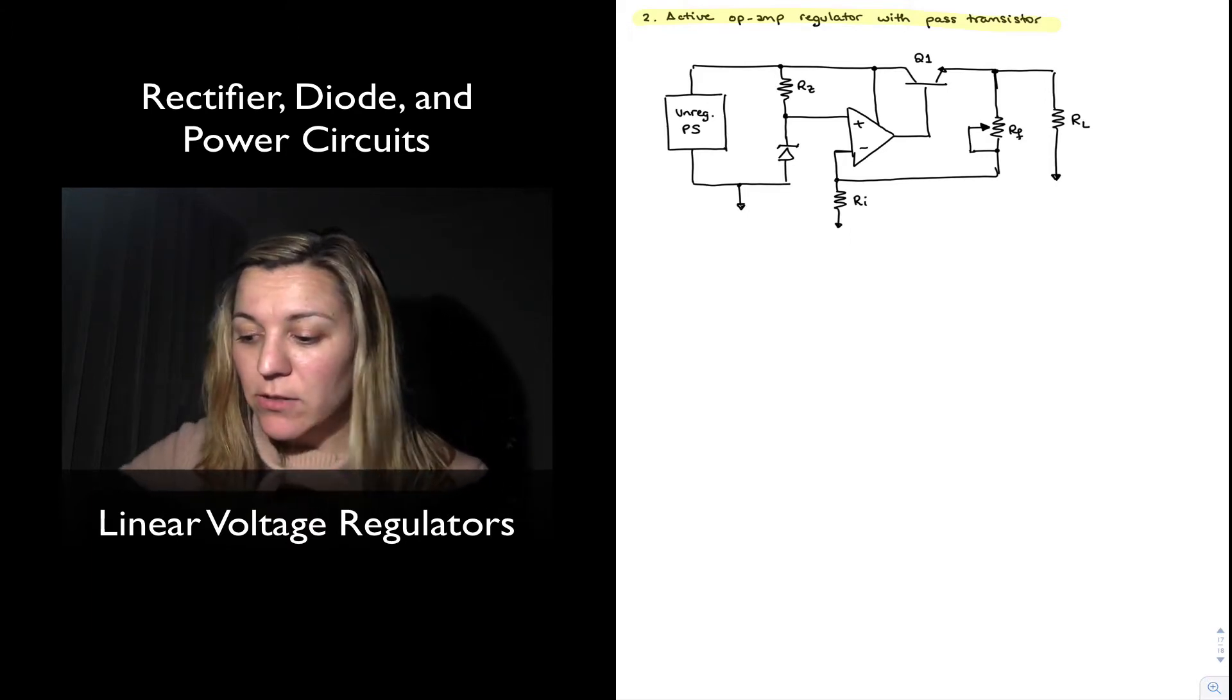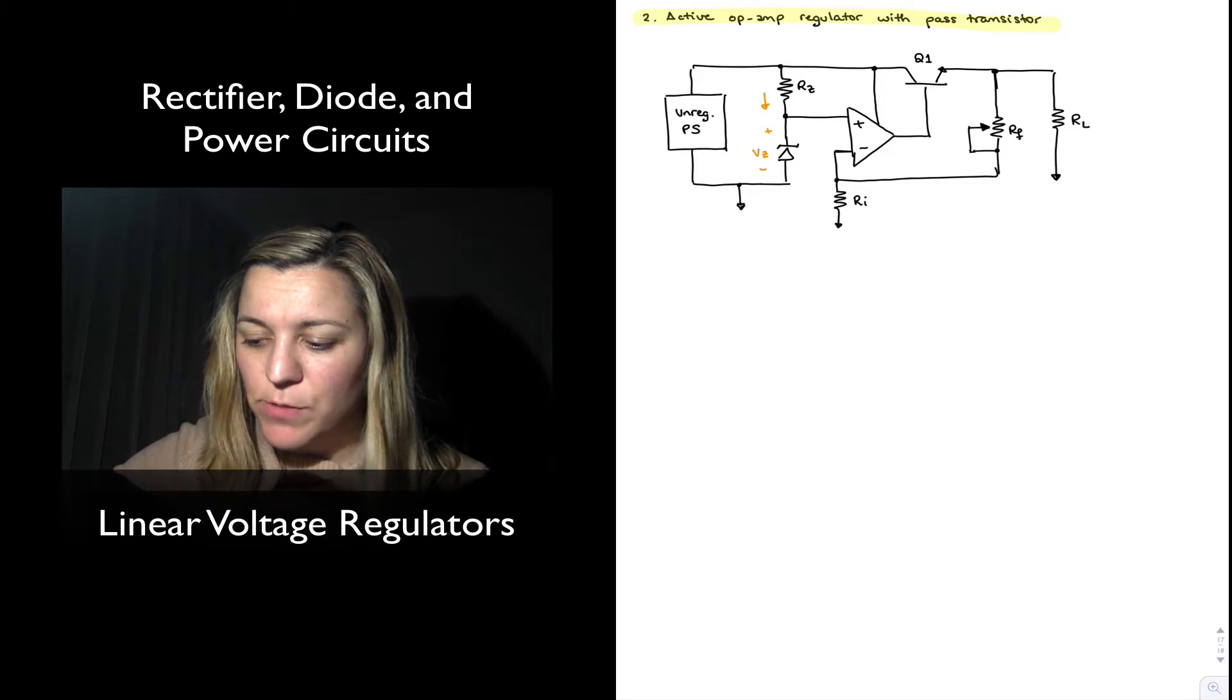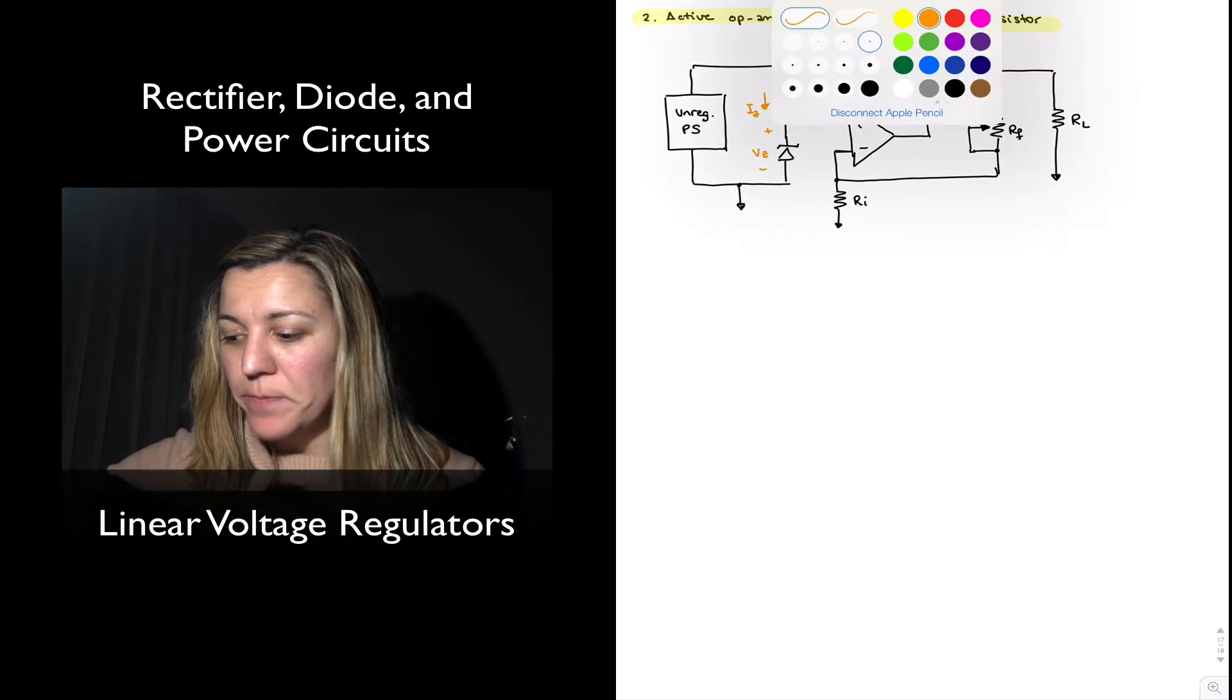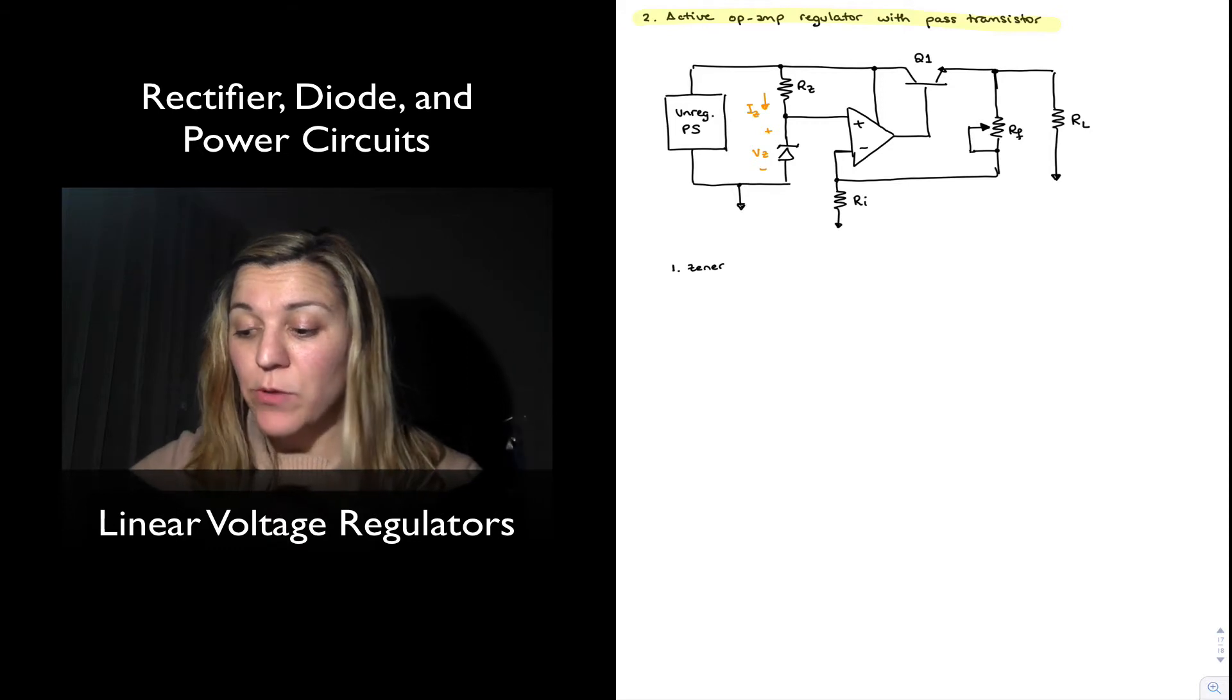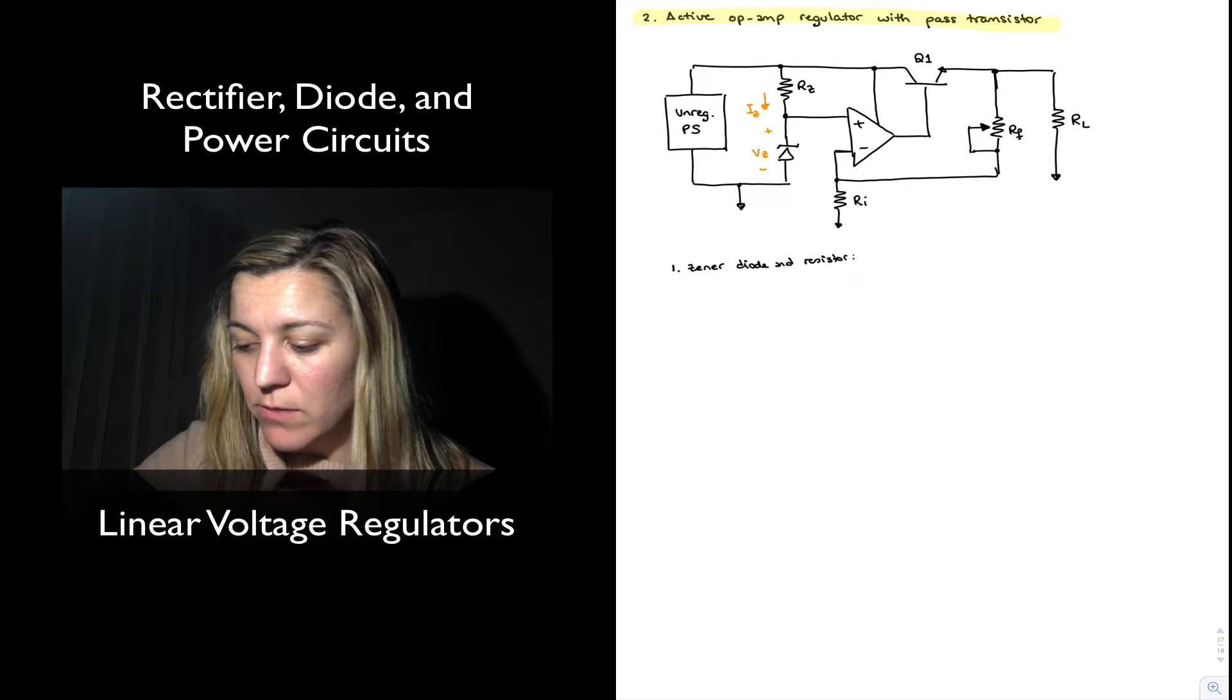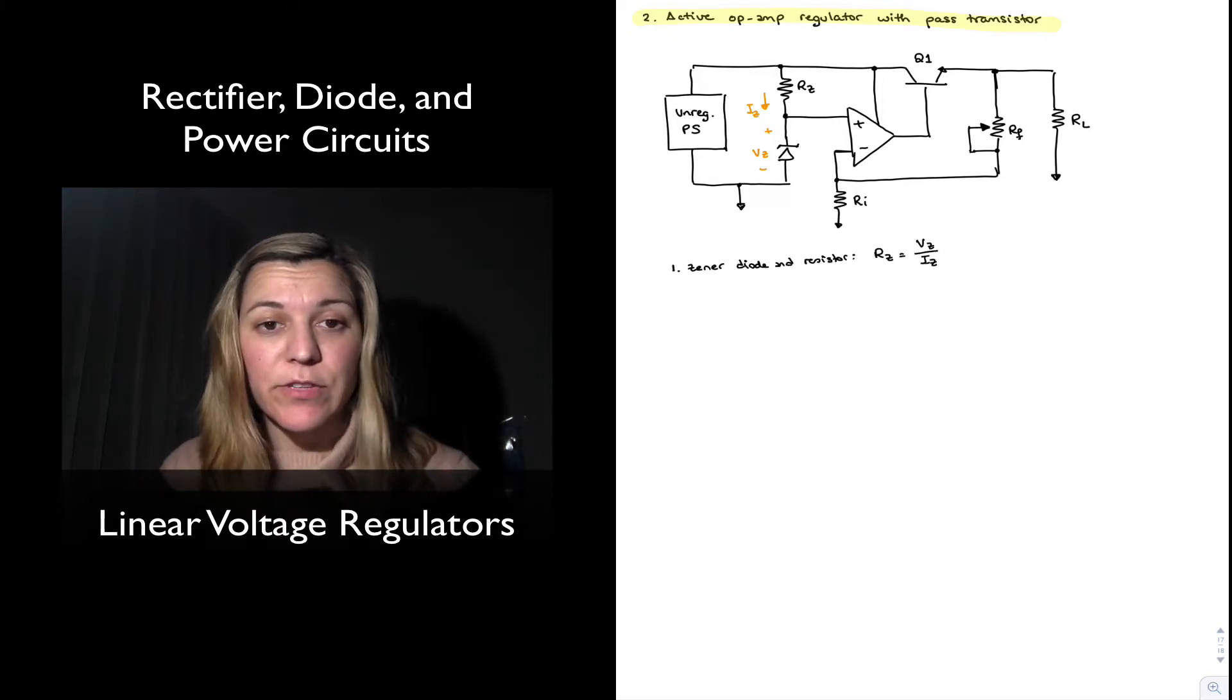Some things to note about the circuit: just like before, we have our Zener diode, and so we have our Zener voltage. The RZ resistor is basically providing the bias for that Zener voltage. The Zener voltage is going to need a minimum amount of current in order to go into its Zener region, so RZ is going to be selected so that the current flowing through it is equal to IZ. Zener diode and resistor basically we will need for RZ to be equal to VZ divided by IZ, and we can get the values from VZ and IZ out of the Zener datasheet.